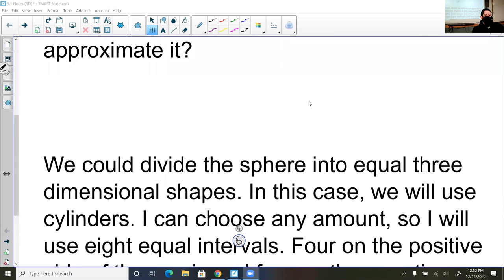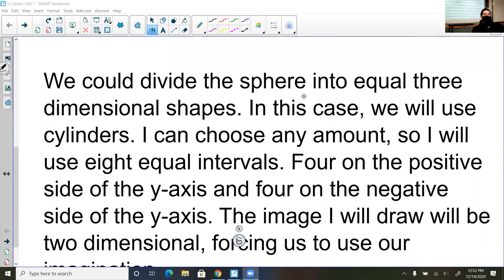Well, the first thing I would do is I would divide the sphere into equal three-dimensional shapes. So yesterday we did equal two-dimensional, so they're all rectangles. In this case, we're going to have a three-dimensional shape. In this case, we'll use cylinders. We can choose any amount, so I will choose eight equal intervals. The logic is if I have four on the positive side, four on the negative, it's a sphere, so it's symmetrical.